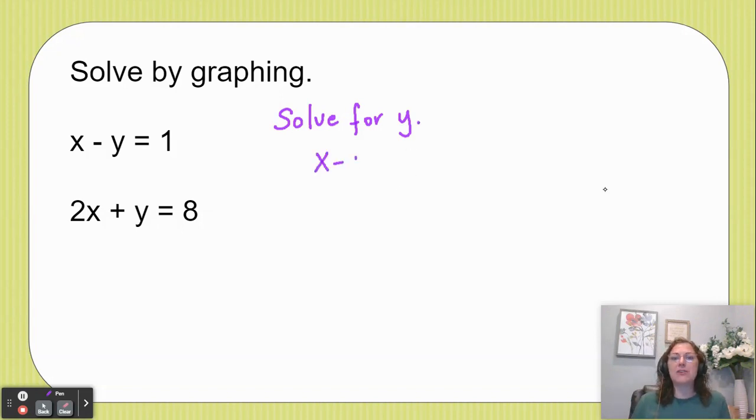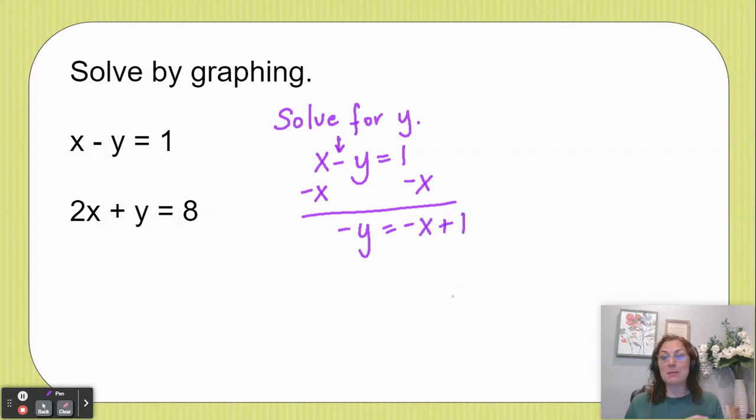I'm going to take the first equation and get y by itself. That means I need to subtract x from both sides. That leaves me with negative y - notice the negative right there, I can't lose that - equals, and then I like to write it as negative x plus 1. Those of you remembering the y equals mx plus b form, that's exactly why I do that. Then we'll divide each of these terms by negative 1 so that we get y equals positive x minus 1.